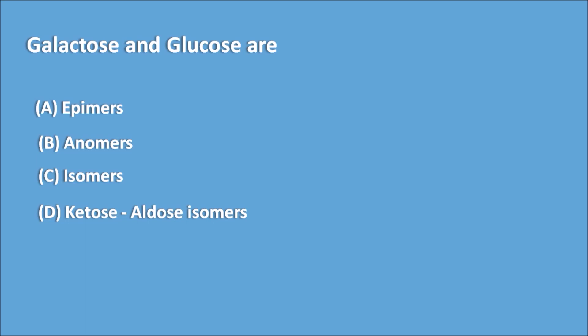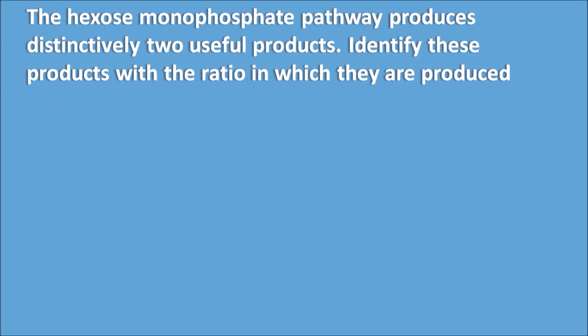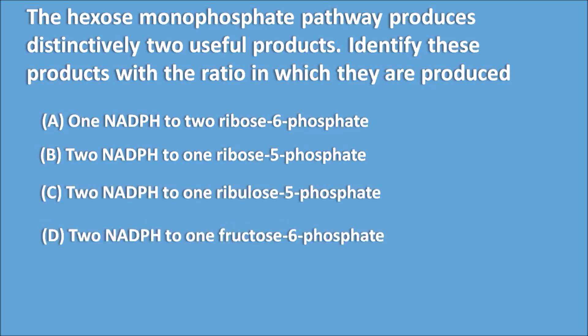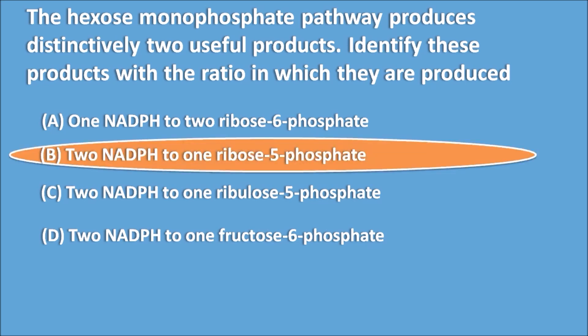The Hexose Monophosphate (HMP) shunt pathway produces two useful products. Identify these with the ratio in which they are produced: (a) 1 NADPH₂ : 2 Ribose-6-phosphate, (b) 2 NADPH₂ : 1 Ribose-5-phosphate, (c) 2 NADPH₂ : 1 Ribulose-5-phosphate, (d) 2 NADPH₂ : 1 Fructose-6-phosphate. If you know the HMP shunt pathway, you can identify the answer is (b) 2 NADPH₂ : 1 Ribose-5-phosphate. This concludes the basic-level questions from different subjects in GPAT 2018.